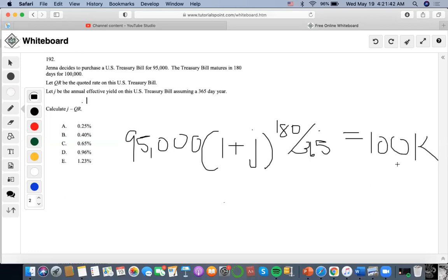Now I'm going to find J, I'm going to do 100K divided by 95K, and get 1.05263, and I'm going to move this exponent over, so I can do to the power of 365 divided by 180.